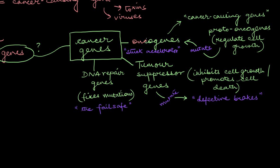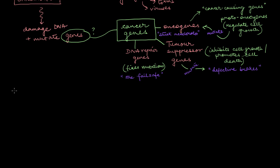If a carcinogen manages to mutate any of these three types of genes, then there's a really high chance of developing cancer. Now the question is, how are these carcinogens going to achieve something like that?